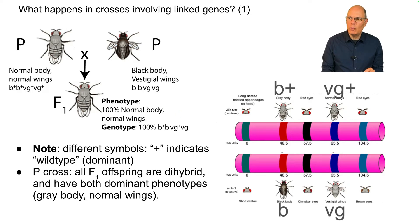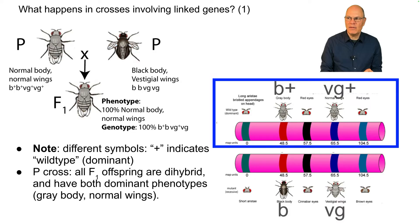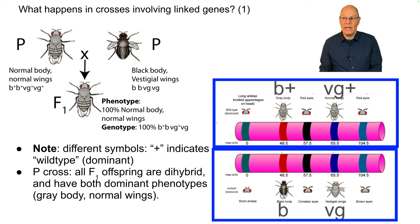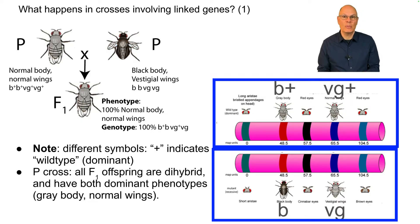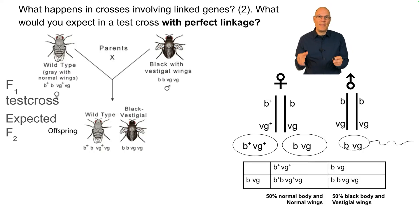Here we're representing this chromosomally: B+, VG+ on one chromosome, and B, VG on the other. Notice that B+ and VG+ are on the same chromosome, and B and VG are on the same chromosome too. These genes are linked.